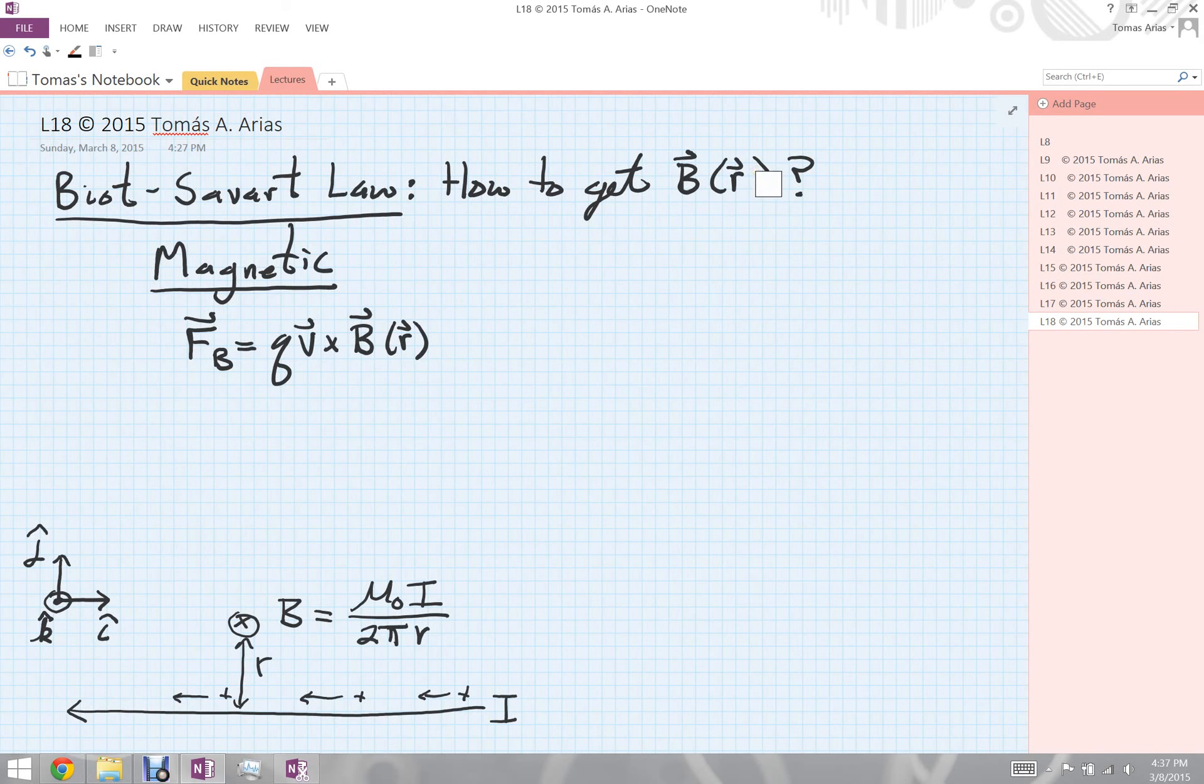If you think about what we know so far, we've learned that the force on a particle traveling through a particular point in space r can be a force which depends upon that particle's velocity. This is known as the magnetic force, and we have a nice formula for it, provided, of course, we know the magnetic field.